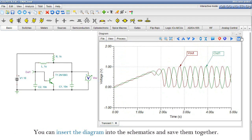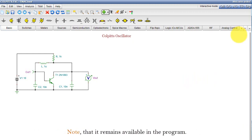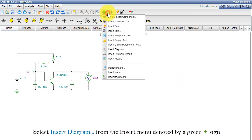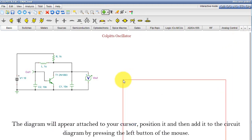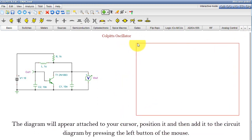You can insert the diagram into the schematics and save them together. Close the diagram window. Note that it remains available in the program. Select Insert Diagram from the Insert menu denoted by a green plus sign. Press the Insert button. The diagram will appear attached to your cursor. Position it and then add it to the circuit diagram by pressing the left button of the mouse.